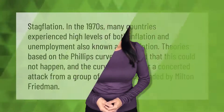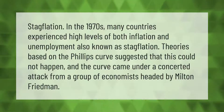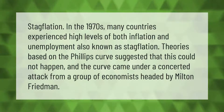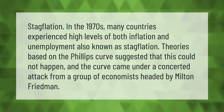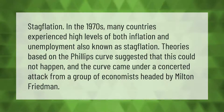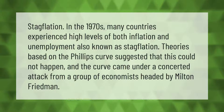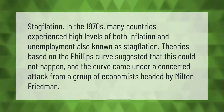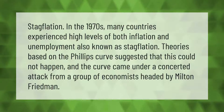During stagflation in the 1970s, many countries experienced high levels of both inflation and unemployment. Theories based on the Phillips curve suggested that this could not happen, and the curve came under a concerted attack from a group of economists headed by Milton Friedman.